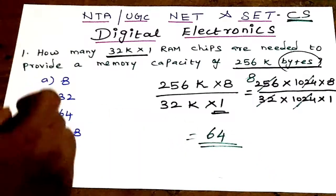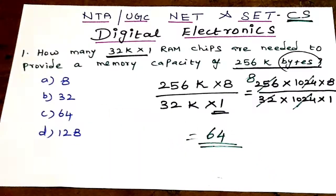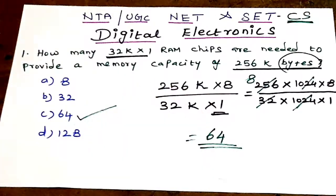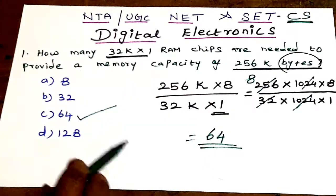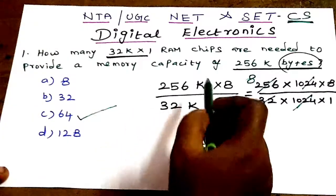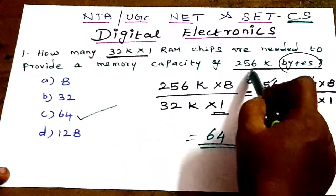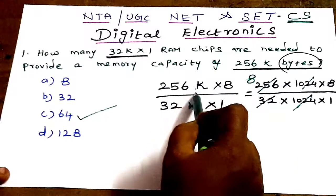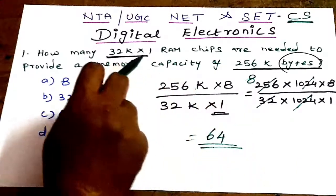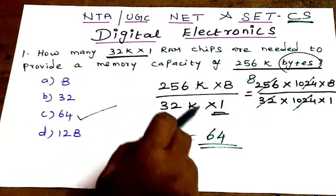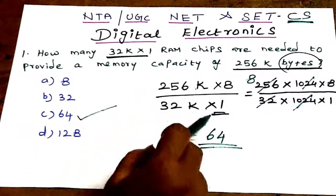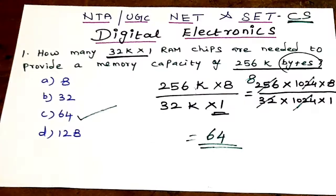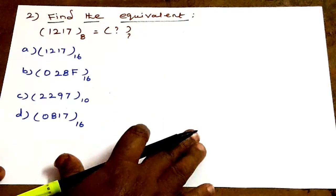64 RAM chips are needed. Option C — 64 — is the correct answer. Next question.